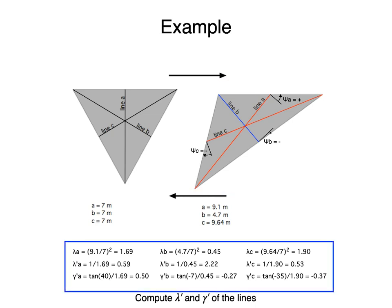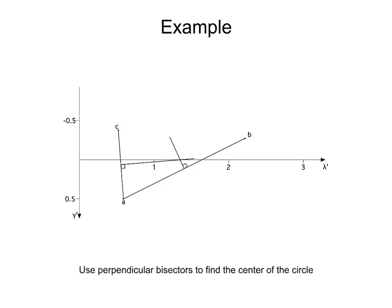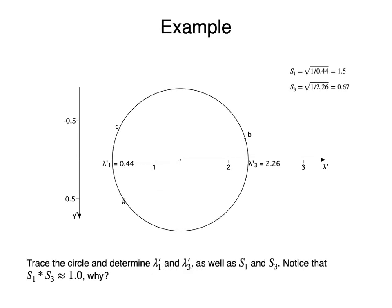We can now determine the quadratic elongation lambda, the inverse of the quadratic elongation lambda prime, and gamma prime, which is the shear strain over lambda, for the three lines. Recall that the quadratic elongation is the square of the stretch, and the shear strain is the tangent of the angular shear. We can then plot lines A, B, and C in the Mohr Circle diagram using their lambda prime and gamma prime coordinates. Remember that positive shear strain and gamma prime plots below the horizontal axis. We can trace perpendicular bisectors to the lines A-B and A-C, which will intersect at the center of the Mohr Circle. We can now trace the Mohr Circle, and lines A, B, and C will of course be on the Mohr Circle.